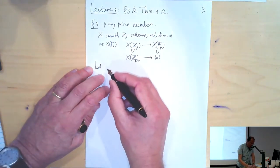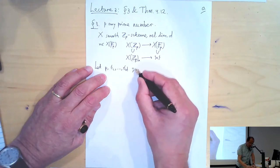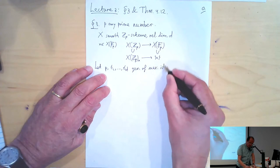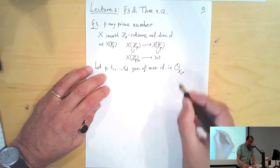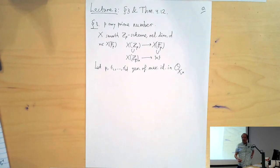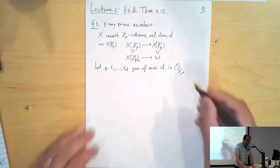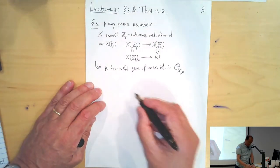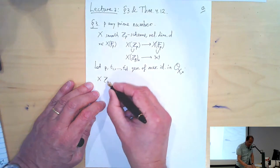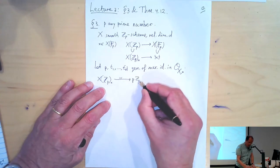We take parameters t_1 up to t_d — generators of the maximal ideal in the local ring O_{X,x}. Because of smoothness this is a regular local ring of dimension 1+d. If you divide out by p you get something smooth over F_p of dimension d, and you can take d parameters there with lifts in the original ring — generators of the maximal ideal.